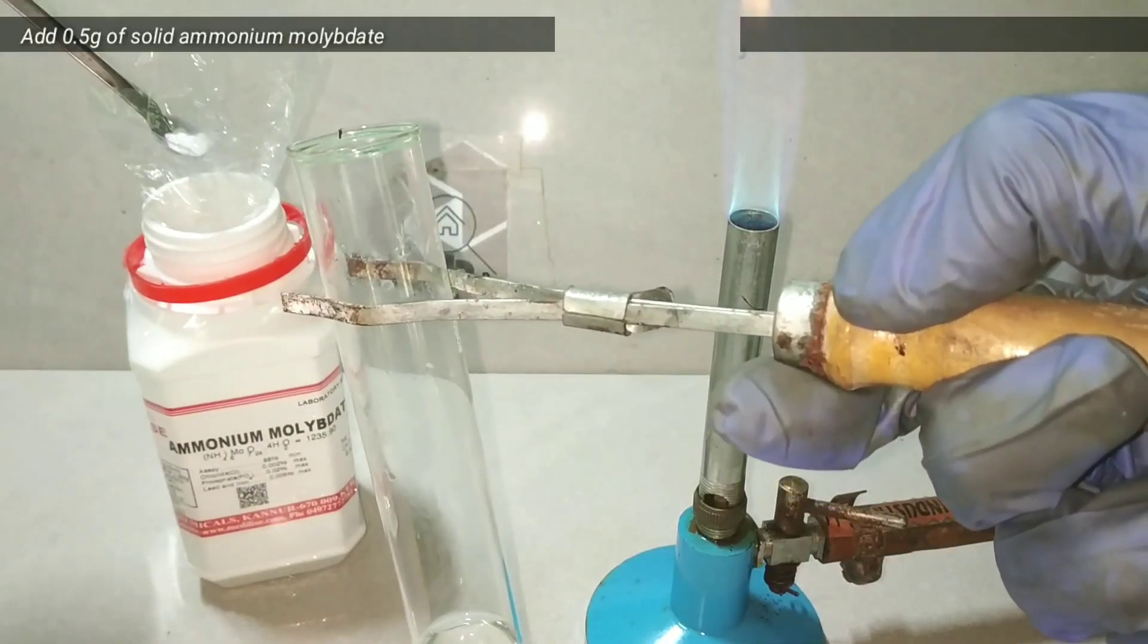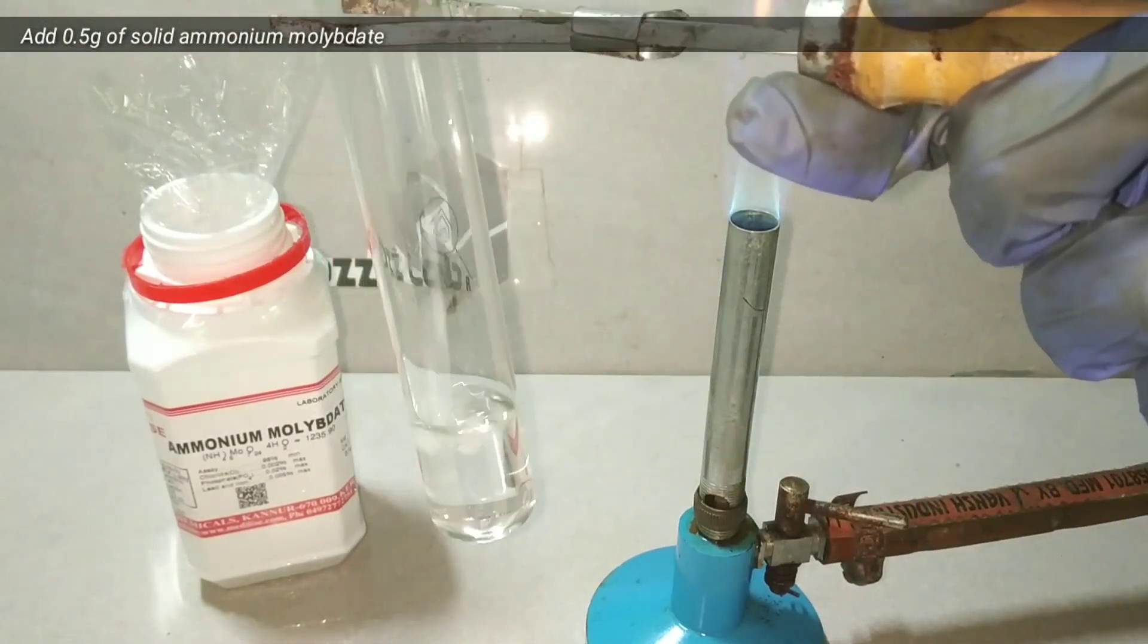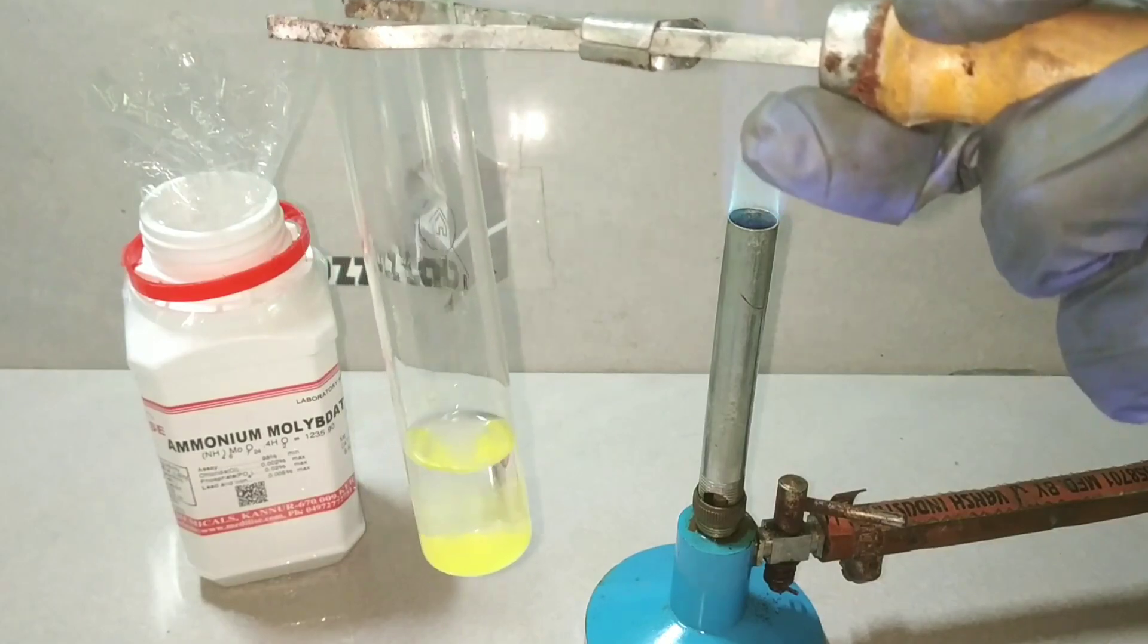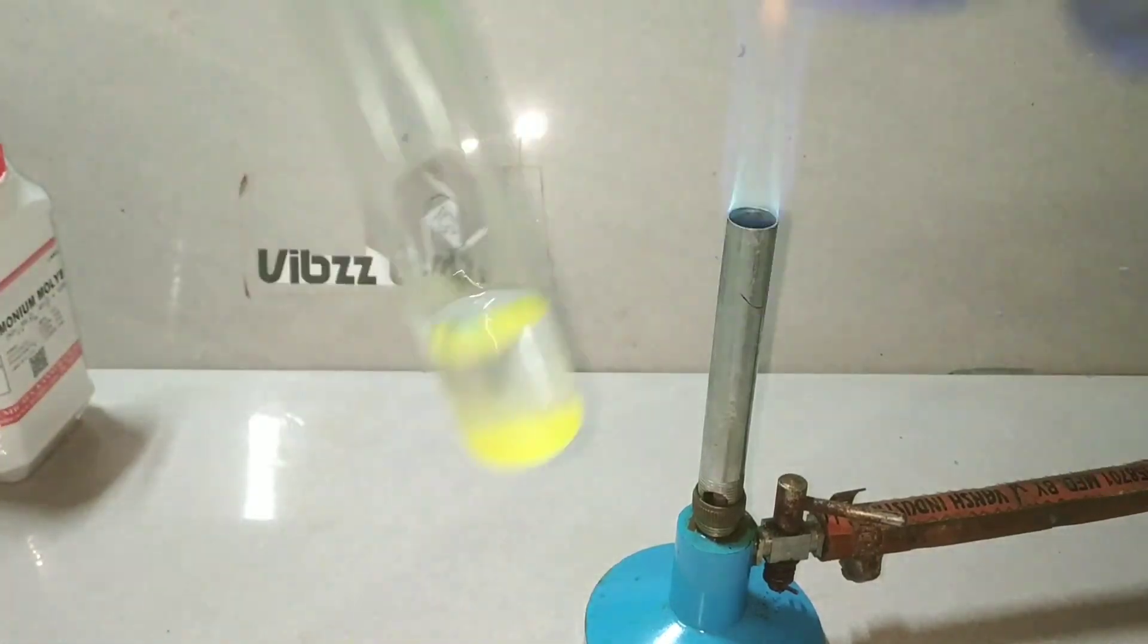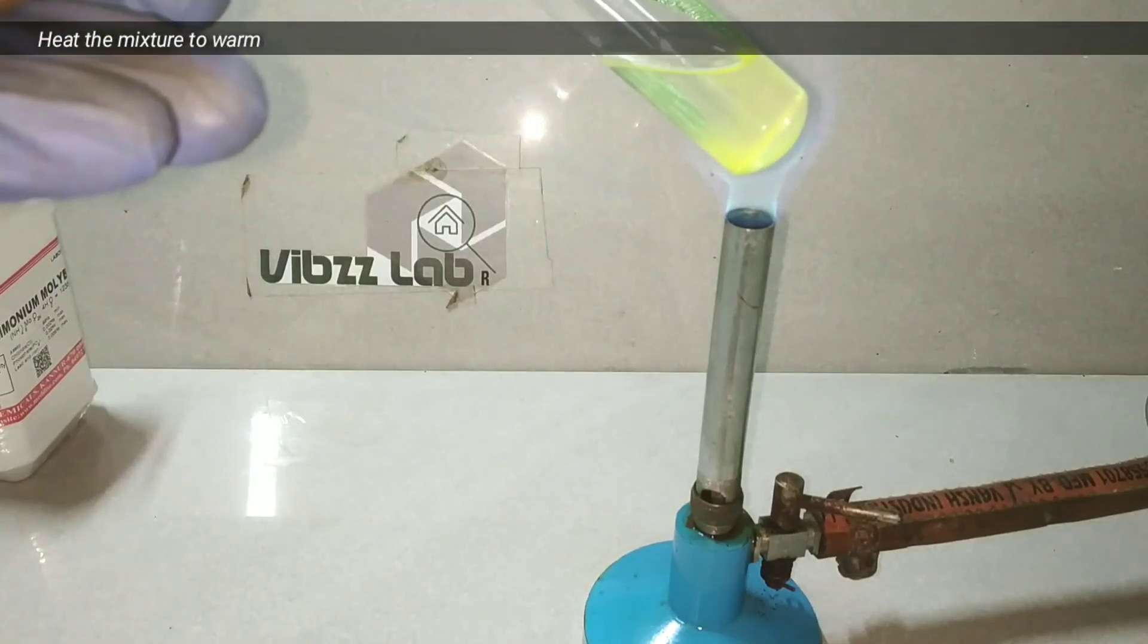Then we add about half a gram of solid ammonium molybdate reagent into it. You immediately see a yellow precipitate formed. Now we heat this test tube to boiling so that complete precipitation takes place.